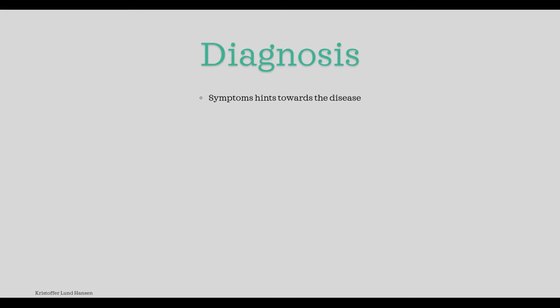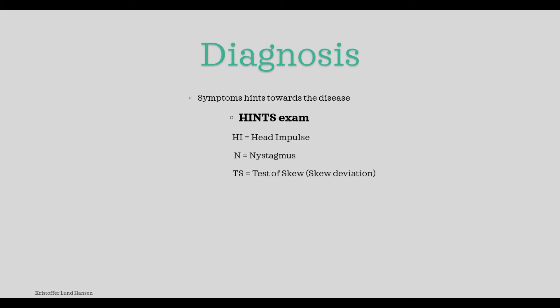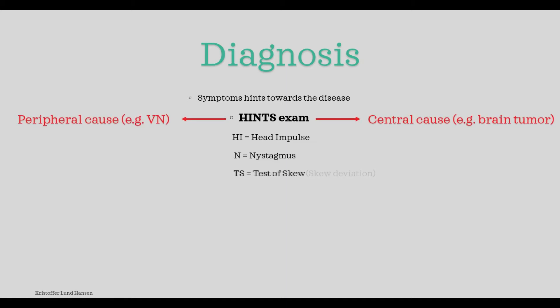The diagnosis rests on two basic parameters. The first is that we have the symptoms that hint towards the disease. The second is that we must perform an examination called the HINTS examination. HINTS is an abbreviation standing for three different tests: the head impulse test, nystagmus, and test of skew. These three are done and evaluated together, and the results are important to differentiate whether we have a peripheral cause or a central cause. Links for more details about each individual test are in the description.